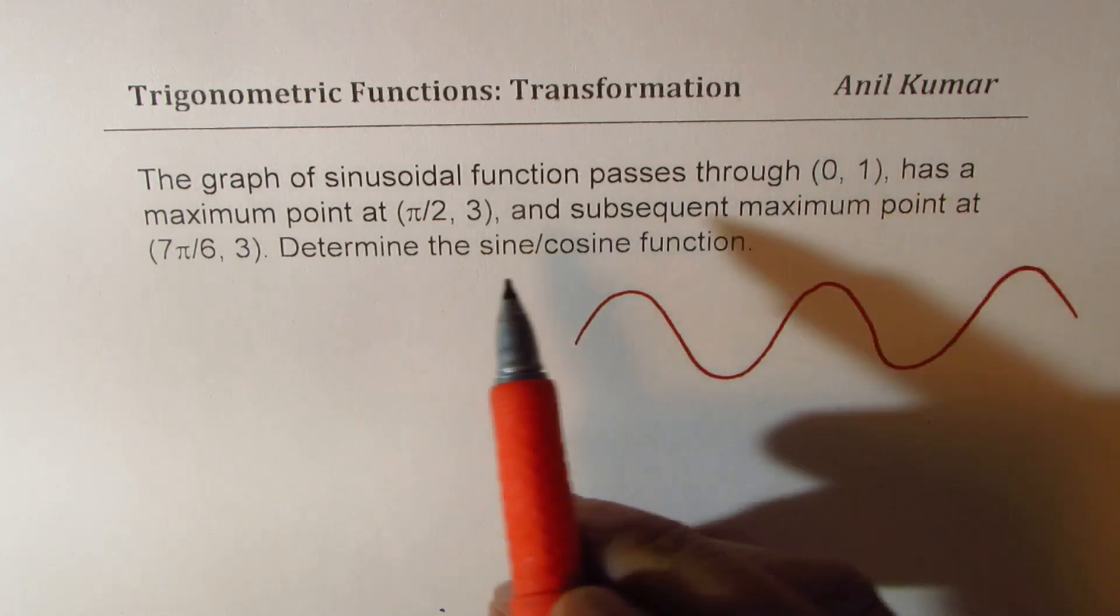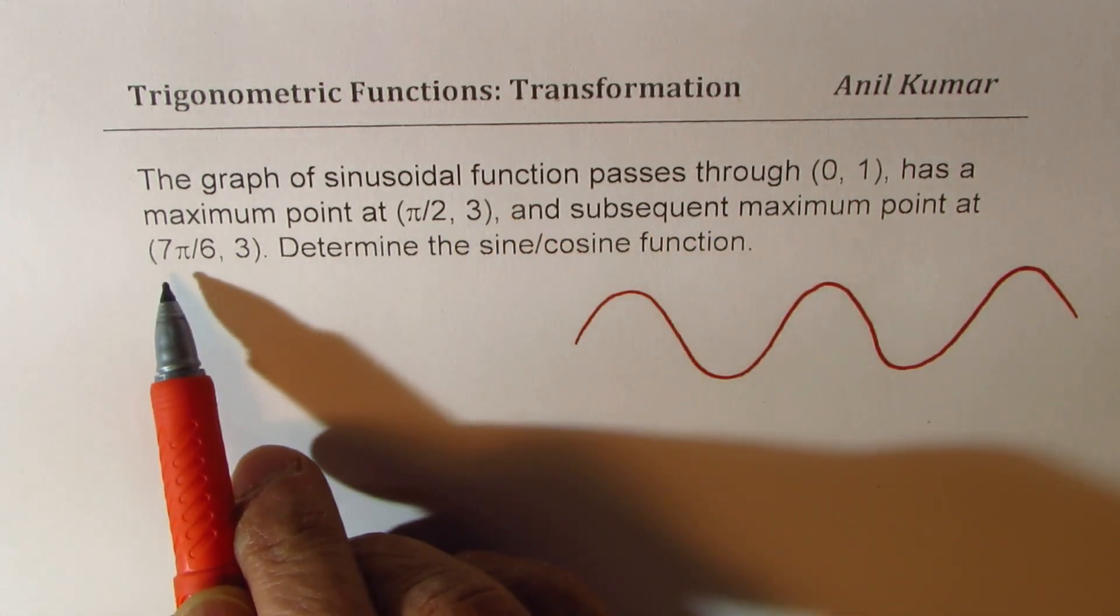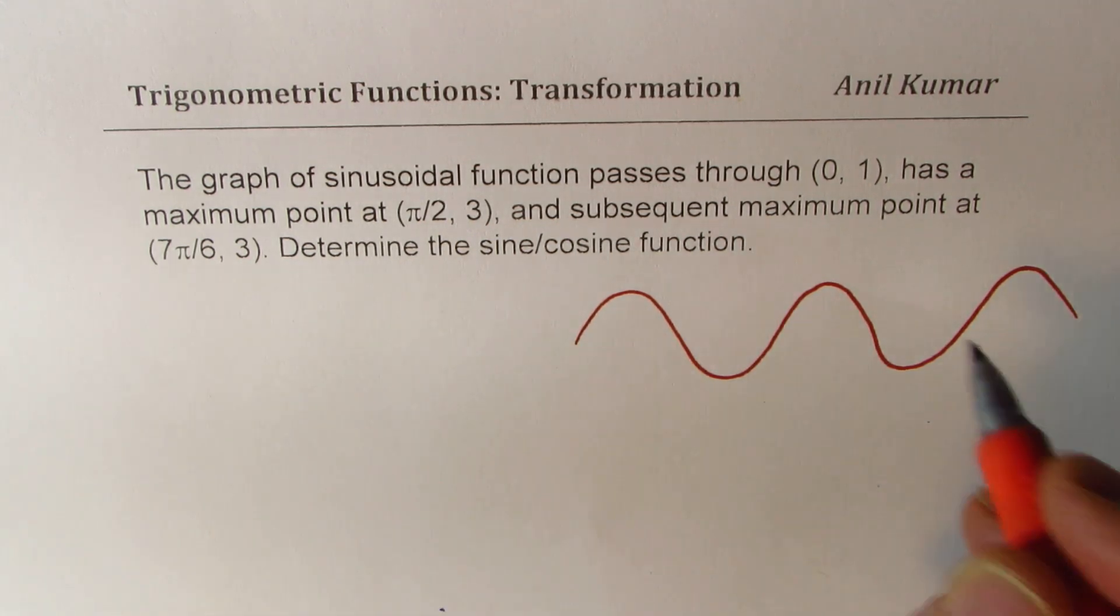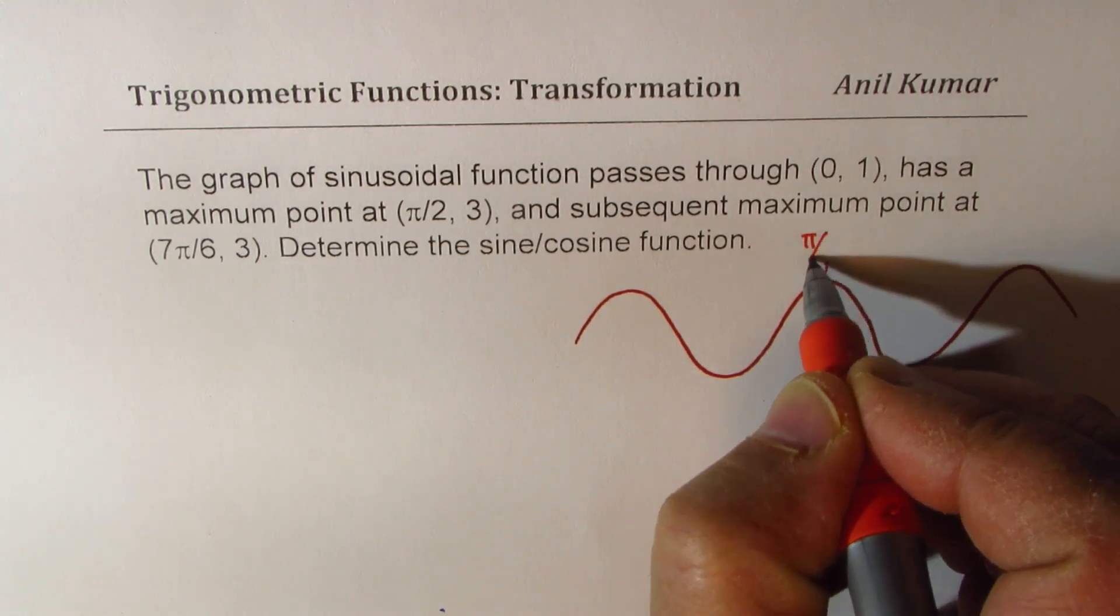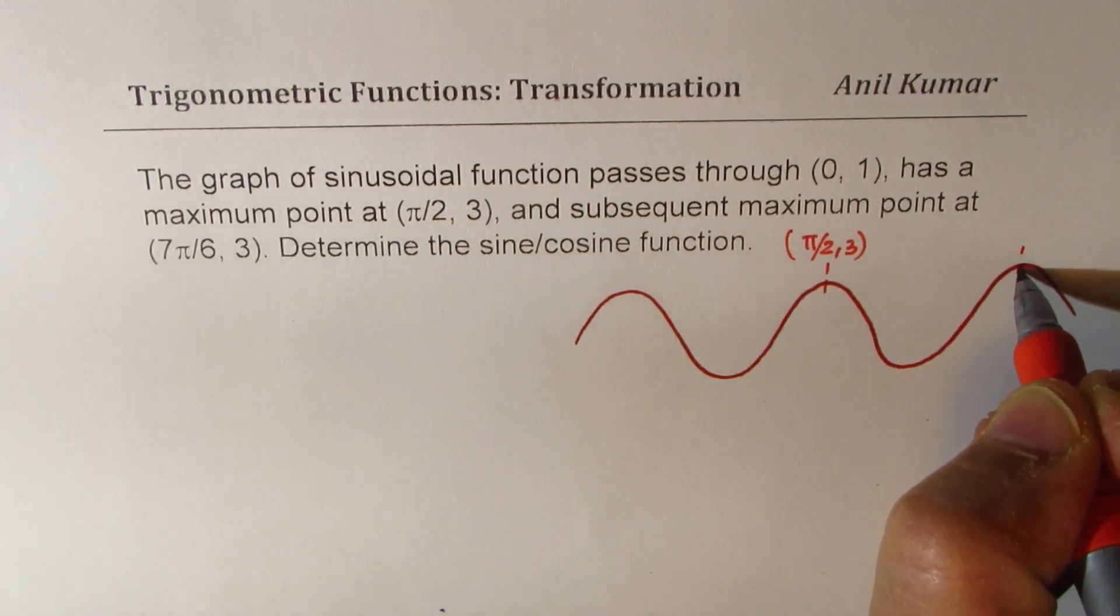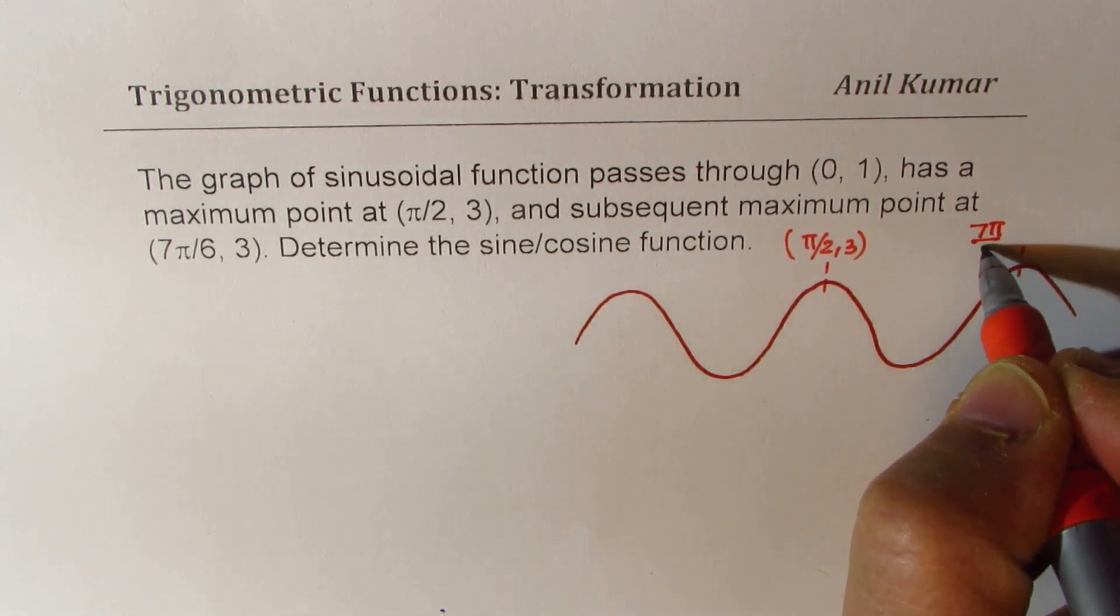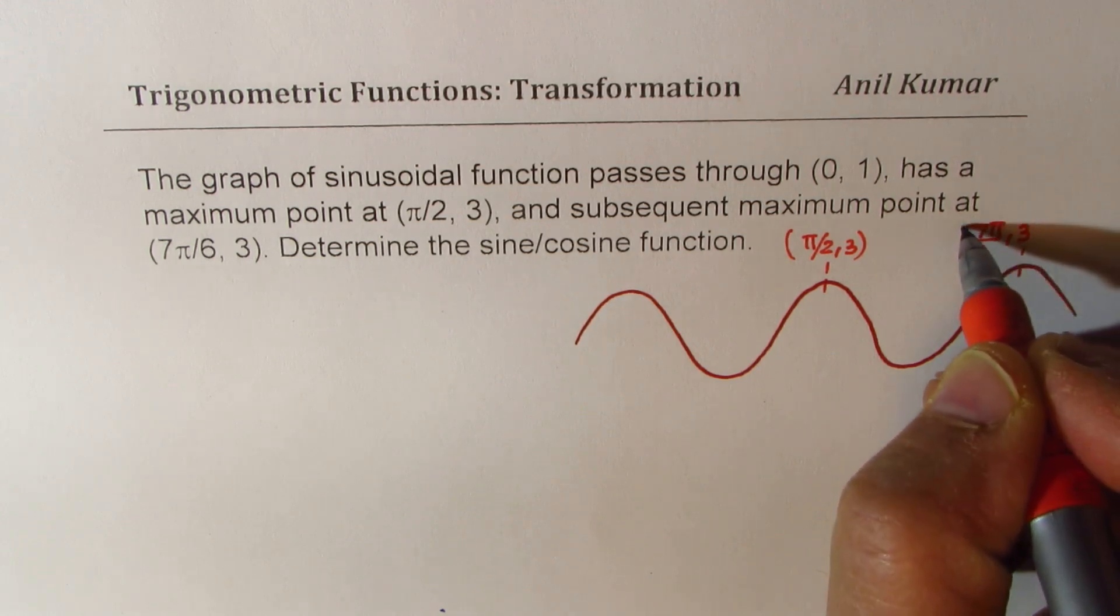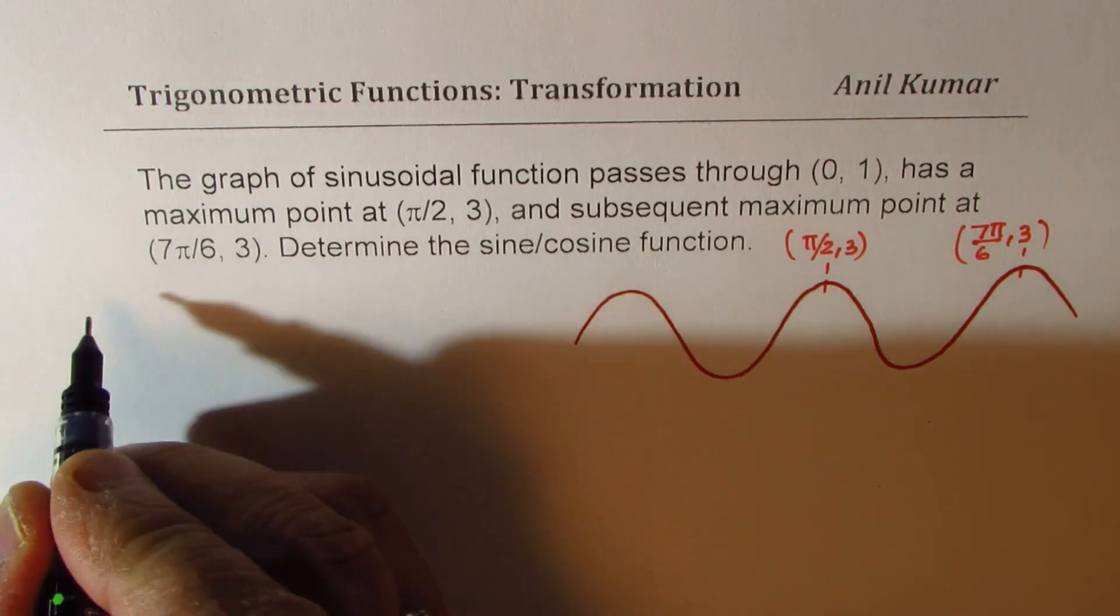So we are given that one maximum is at π/2, 3. The other one is at 7π/6, 3. So let us say this is one of our maximums which is at (π/2, 3). The other maximum is at (7π/6, 3). Now that gives you the time period. So from these two maximums, we can find the time period.